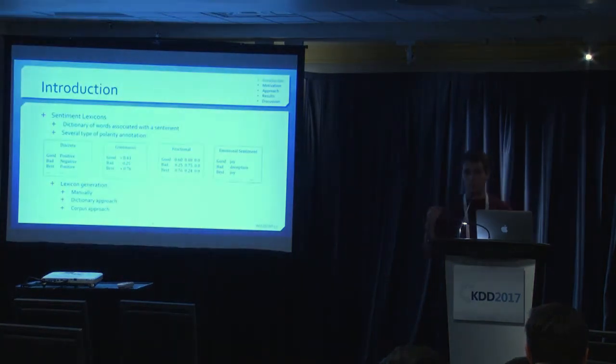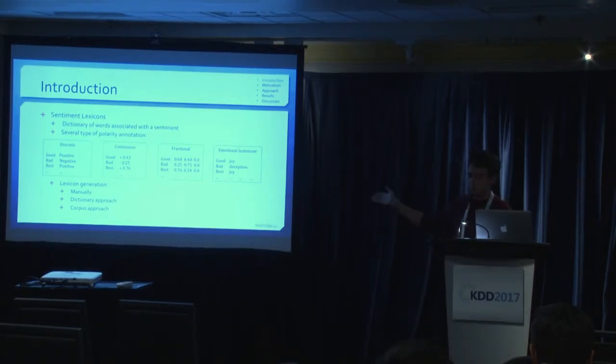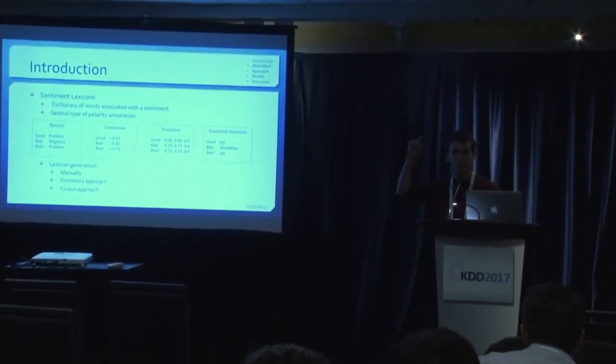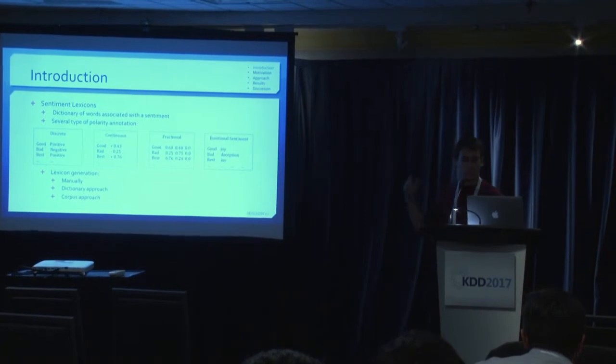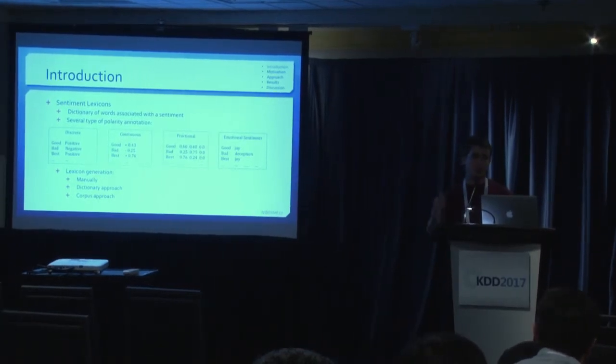So, a lexicon is just a dictionary, so it's a list of words mapped to a score, or a sentiment orientation or sentiment strength. It could be both. Sometimes you have different polarity annotations. Here are a few. So discrete annotation is just basically, you have the word, and it's either positive, negative, or neutral. Then you have the continuous polarity annotation, which is assigning an actual continuous score to the word. Oftentimes, it's between negative one and positive one. And that's the kind of score we will be focusing on in this talk.